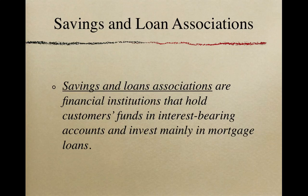In 1982, the government passed new regulations allowing them to charge higher interest rates and offer more services. In the late 1980s, about 20% of the savings and loan associations failed. In response, new regulations were passed. The services offered by savings and loan associations today are very similar to the services offered by commercial banks and credit unions.